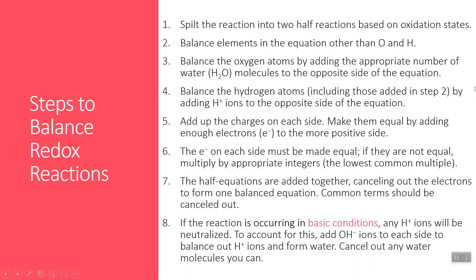The steps to balancing redox reactions are a little bit more complicated than regular reactions because they have to be both atom balanced and electron balanced. The first thing you'll want to do is split the reaction into its half reactions based on the changing oxidation states, identifying what's being oxidized and what's being reduced.